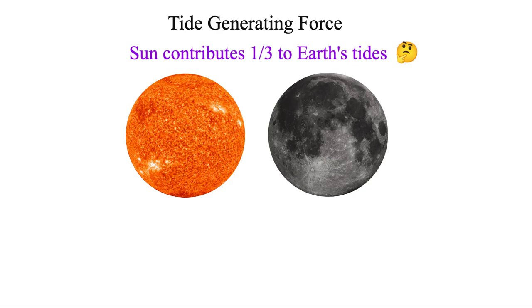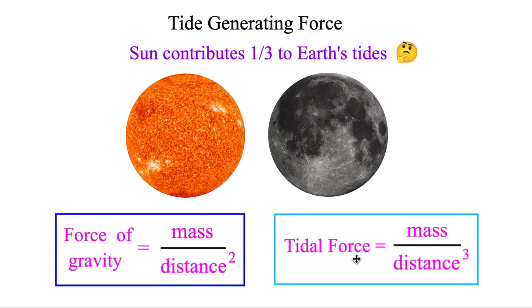So we're going to be able to prove that using this formula for tidal force. You just take the mass of whatever object you're interested in, divided by its distance cubed. But it's very similar to the force of gravity, mass over distance squared. So what's the difference here?